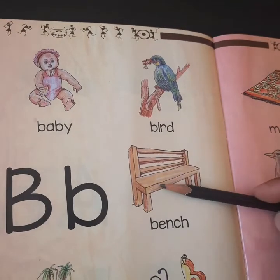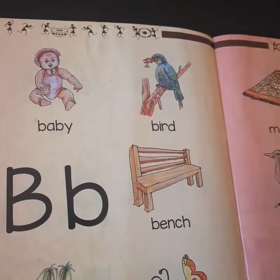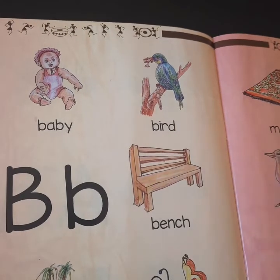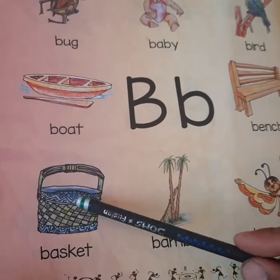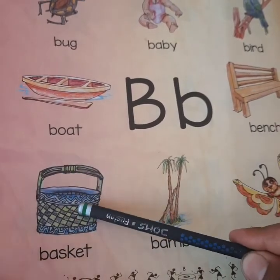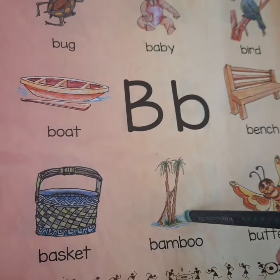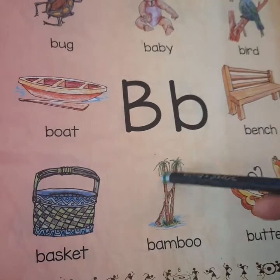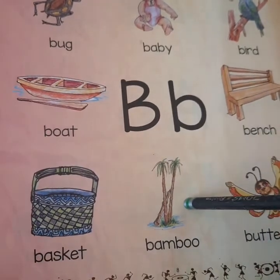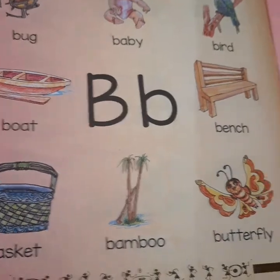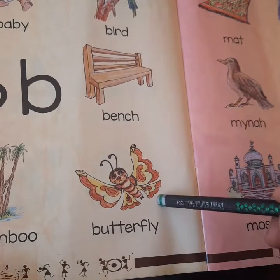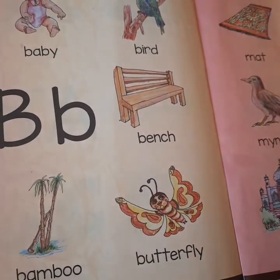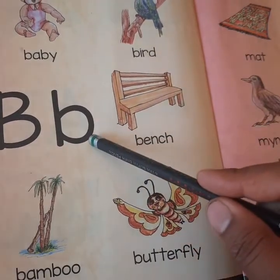Next, bench — it is made of wood, and you can use this bench to sit. Next, basket — a basket is used to keep or carry some things. This is bamboo — bamboo means bidiru. Next, this is a butterfly — this is also an insect. So you have learned a few words related to the letter B says B.